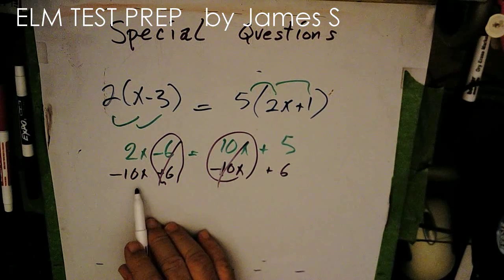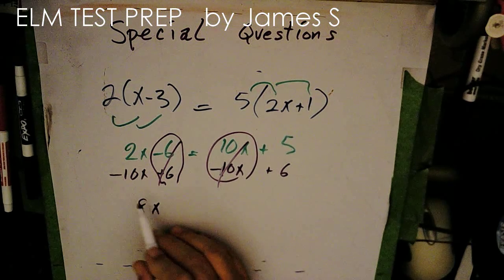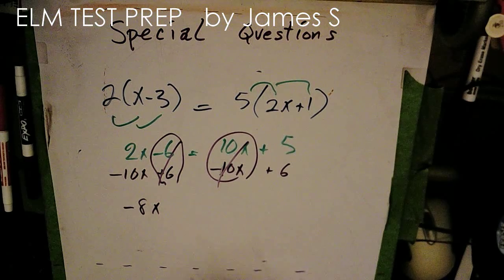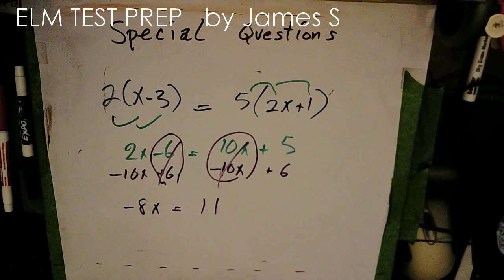So 2x take away 10x, their opposite sign so I'll take the difference as 8x and the larger is negative. And over here they're the same side so I'll just add them and I'll get 11.